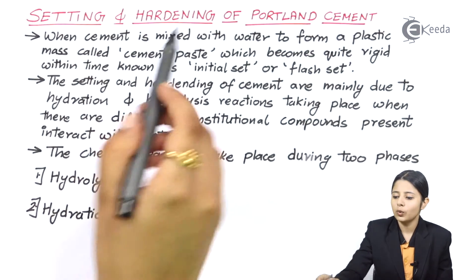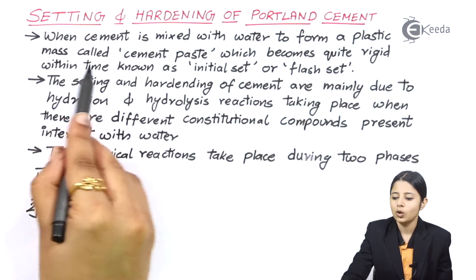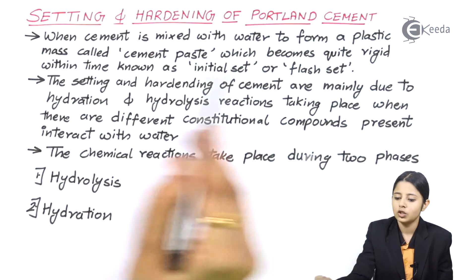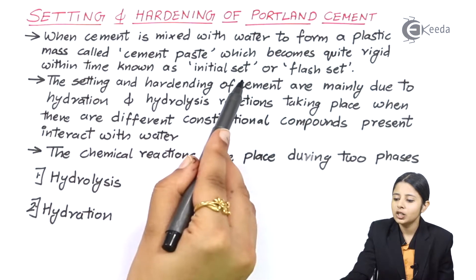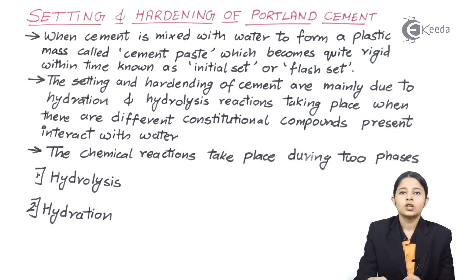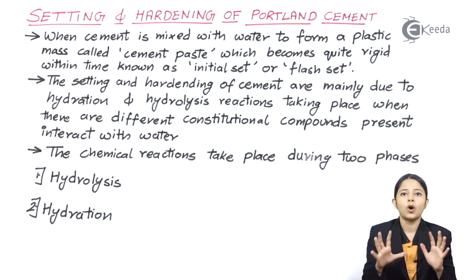When cement is mixed with water to form a plastic mass called cement paste, it becomes quite rigid within time known as initial set or flash set. The cements which we get are all in dry powder form.